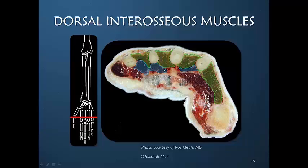The volar interosseous muscles are indeed volar both to the dorsal interosseous muscles as well as the metacarpals. So the terms volar and dorsal are to some extent correct, because in relationship to one another that is indeed the orientation of these muscles. But the dorsal interosseous muscles are not dorsal to the metacarpals.